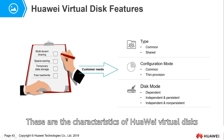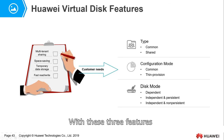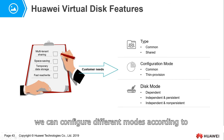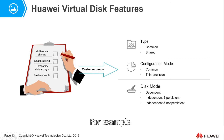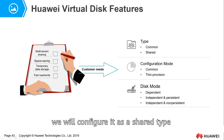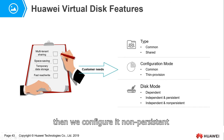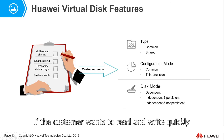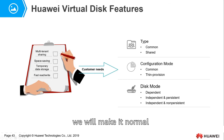These are the characteristics of Huawei Virtual Disk. With these three features, we can configure different modes according to customer needs. For example, if a customer needs a disk shared by multiple people, we configure it as shared type. If the data is only temporarily saved, we configure it as non-persistent. If the customer wants fast read and write, we make it normal.